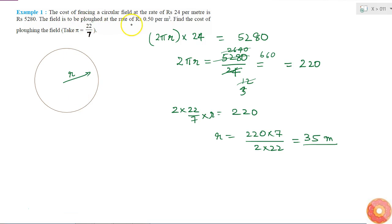Now the field should be plowed at the rate of 0.5 per meter square. So if you want to plow the field, then that means you will consider the area, right? So if you want to plow the field with the total area, then what is the total cost? Total cost is simply total area multiplied by rate.